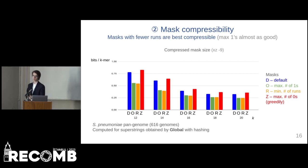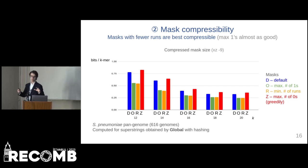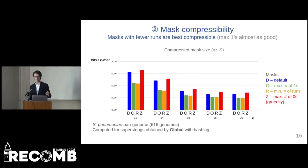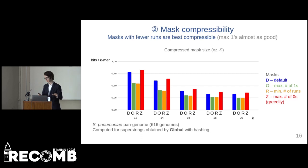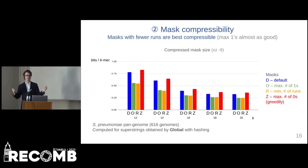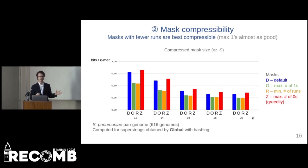The four mask objectives are: the default mask produced by greedy, minimizing the number of ones, maximizing the number of ones, minimizing the number of runs of ones, and maximizing the number of zeros. Results are shown for different values of k, with bits after compression per k-mer on the y-axis. We can see that minimizing the number of runs produces the best outputs. However, maximizing the number of zeros is almost as good and might be very well usable, since unlike minimizing the number of runs of ones, it is very easily computed.